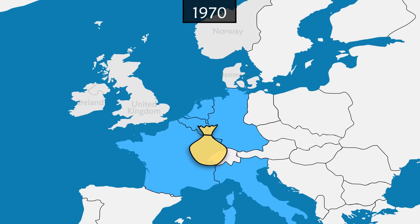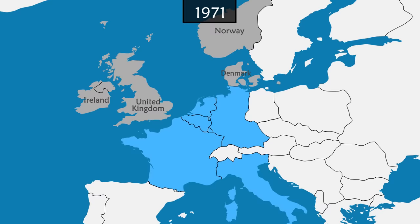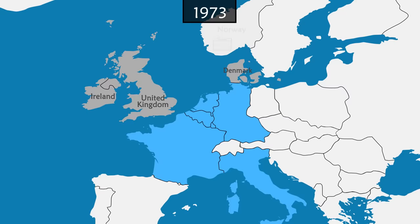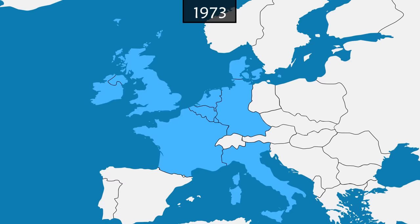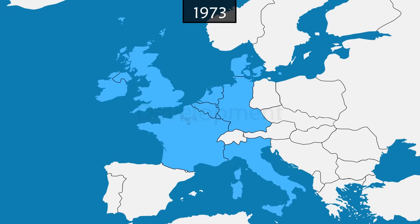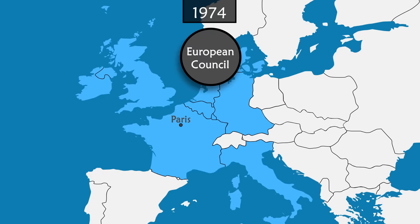This time, negotiations go well. But in Norway, the population opposes the country's accession in a referendum. In 1973, Ireland, the United Kingdom and Denmark joined the community. In Paris, the heads of state and government come to an agreement to create the European Council. Leaders would meet at least three times a year to together define the broad guidelines of the community.